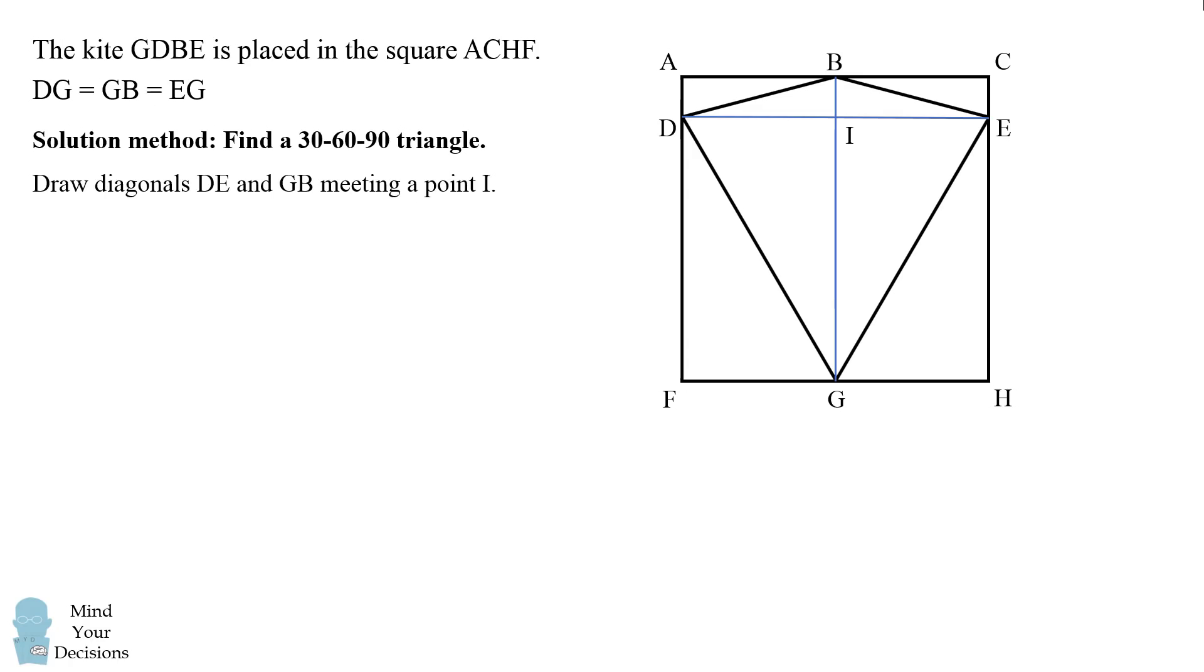In a kite, the diagonals are always perpendicular to each other. Furthermore, since DG is equal to EG, diagonal GB perpendicularly bisects diagonal DE.